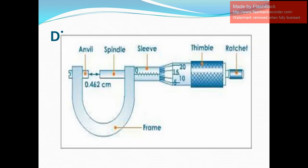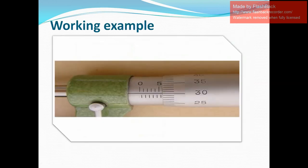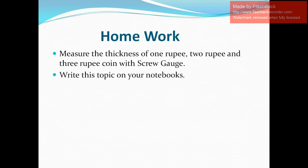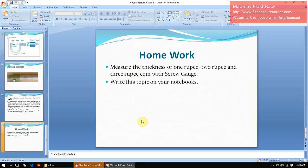In its structure, there is a frame and a sleeve. The object is fixed in the frame between the anvil and spindle, and the reading is taken on the sleeve. The working example gave a value of 5.80 millimeters. Thank you so much.